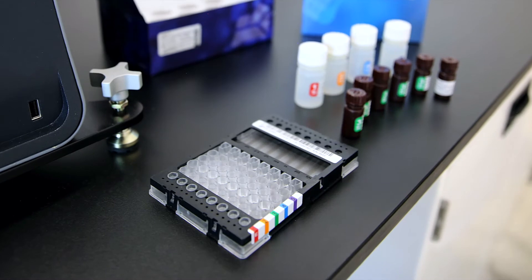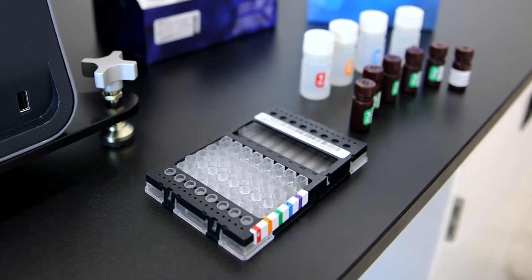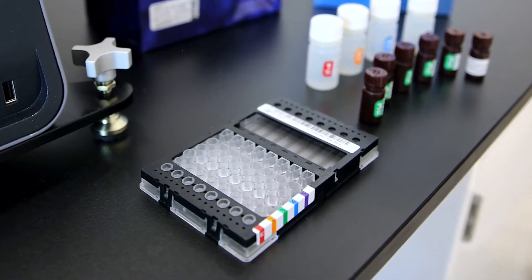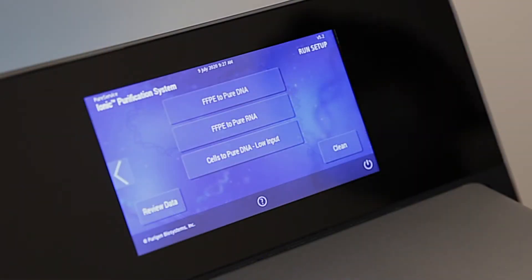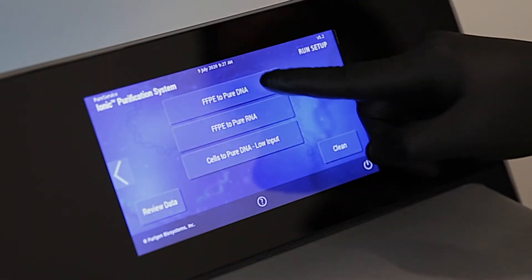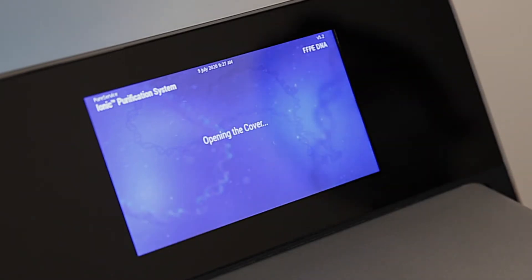While samples are incubating, the fluidic chip should be prepared. This step will only take 10 to 15 minutes to complete. From the touch screen of the Ionic System, simply press the FFPE to Pure DNA Protocol button to start preparation for a run.